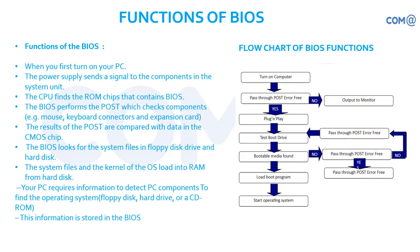First it is checking the floppy disk, whether the operating system is available or not. If it is not available, then it will go to the hard drive, then it will go to the CD drive. It will check for the boot track and boot files — if available, it will load; otherwise it will move on to the next device available for booting. That is being set in the BIOS control panel.